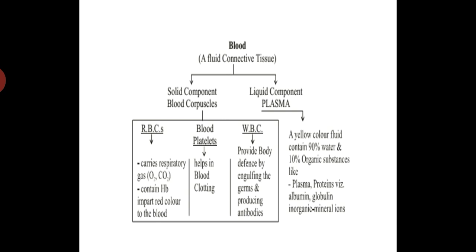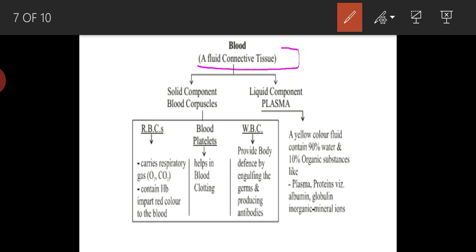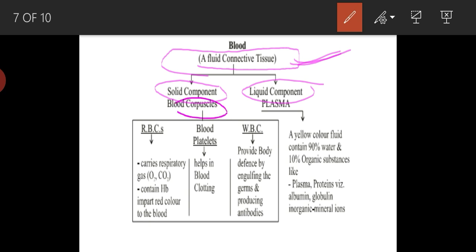Next is blood. The heart's job is to pump blood to different body organs. What is the composition of this blood and what are its components? Blood is a fluid connective tissue — you would have studied connective tissue in 9th standard. Blood has two components: a solid component and a liquid component. The solid component consists of blood corpuscles, meaning blood cells. There are three types of blood cells: RBCs (erythrocytes), blood platelets (thrombocytes), and WBCs (leukocytes). The function of RBCs is to carry oxygen.